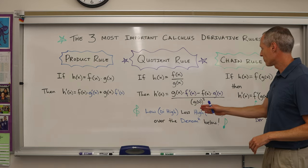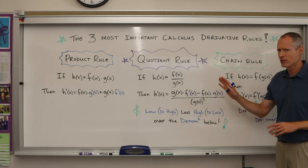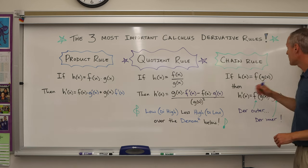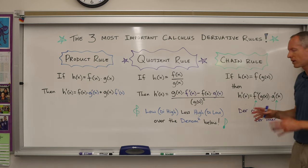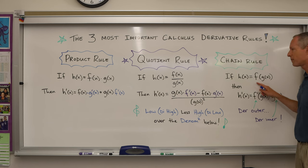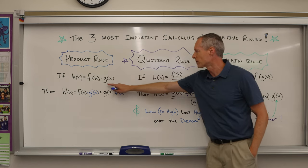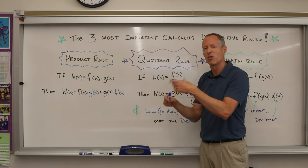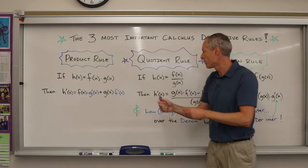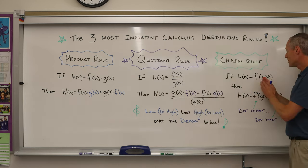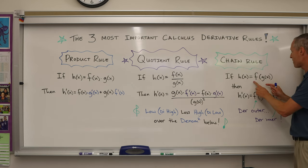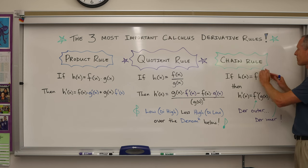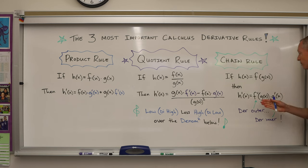The last one is the chain rule. The chain rule is a little more complex. Look at the setup compared to the product rule. Product rule is two separate functions being multiplied, for example like sine x times x squared. Chain rule is a composite function. It's f(g(x)). There's no x here, it's not f(x) times g(x), it's f(g(x)), so it's a function within a function.